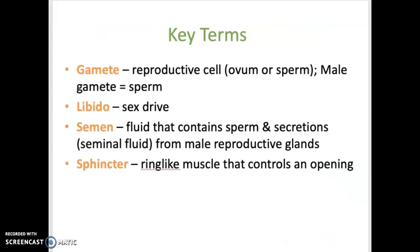Some key terms related to the male reproductive system: The term gamete refers to a reproductive cell — this could be either a sperm or an ovum, which is in females. The male gamete is sperm. Libido is the term for sex drive. Semen is fluid that contains sperm and seminal fluid secreted from the seminal vesicles, the prostate gland, and the bulbourethral glands.